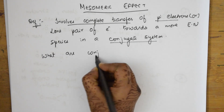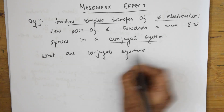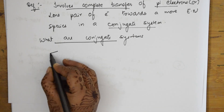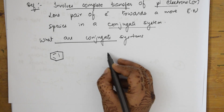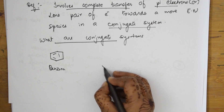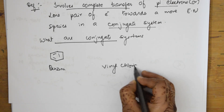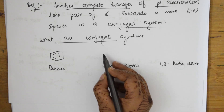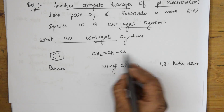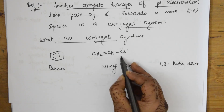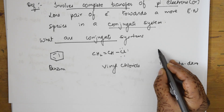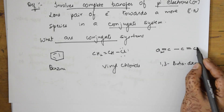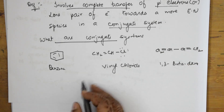What are conjugate systems? Let us look at examples. The first example is benzene. The second example is vinyl chloride, which is CH₂=CH-Cl. The third example is 1,3-butadiene — 'but' means 4 carbons, with double bonds on the first and third carbons. Drawing the structure: CH₂=CH-CH=CH₂, filling in the hydrogens accordingly.